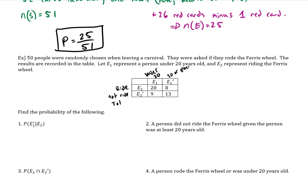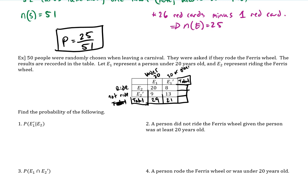With these tables it's usually best to go ahead and get the totals in each direction. So we could add vertically: 29 and 21. And then horizontally: 28 and 22. Adding vertically and adding horizontally for these last ones should be the same number — and it is: 50. So that's the 50 people that were randomly selected in this survey.